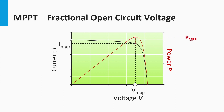One of the most common MPPT techniques in the indirect tracking category is the fractional open-circuit voltage method. This method exploits the fact that a good approximation of V_MPP is given by a constant K multiplied by the open-circuit voltage. This constant K for crystalline silicon is usually found to be around 0.7 to 0.8 in practice. In general, constant K is based on the PV technology and the kind of solar cells in use.